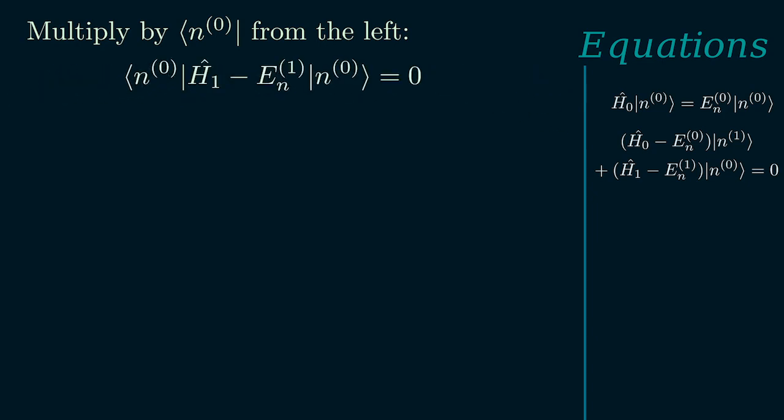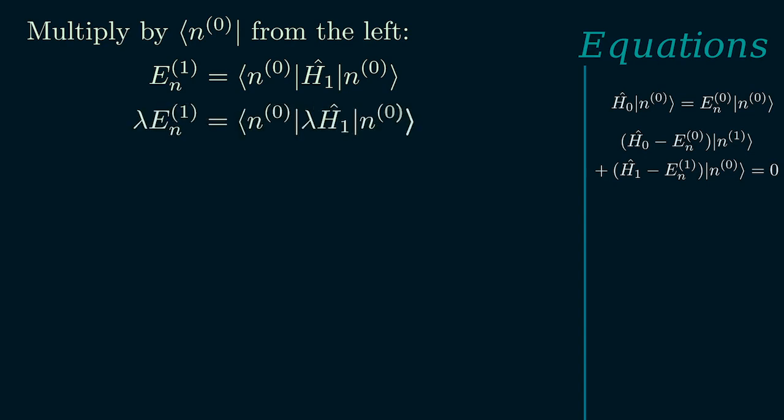Therefore this equation reduces to just the second term like so. Using the linearity of inner products, we can split it up like this. En1 is just a constant so we can pull it out and the inner product of a normalized eigenstate with itself is just one. Moving over the energy term to the other side, we obtain the following. If we rearrange, we see that we have arrived at our final result.